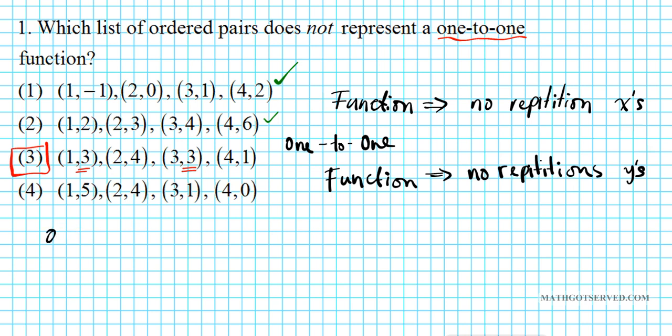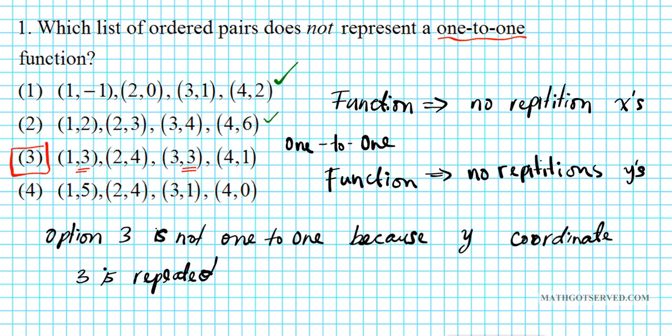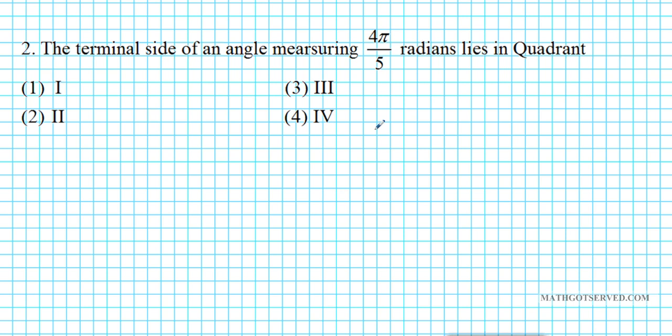Let's write it down. Option 3 is not 1 to 1 because the y coordinate 3 is repeated. That makes it not a 1 to 1 function.